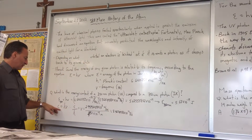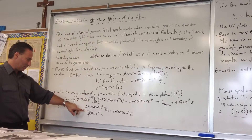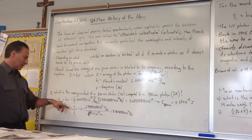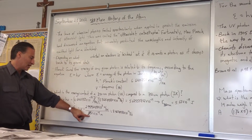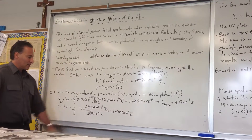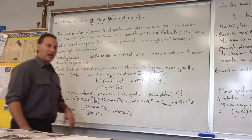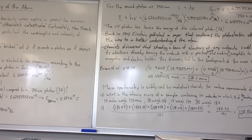To find the frequency of the radiation, I used the equation C = λν and rearranged to find the frequency. For the 350 nm photon, the speed of light is divided by the wavelength converted to meters — 350 × 10⁻⁹ — giving a frequency of 8.5 × 10¹⁴ Hz. That's a very high frequency: 10¹⁴ vibrations per second. For the 750 nanometer photon, rearranging the same equation gives almost 4 × 10¹⁴ Hz.